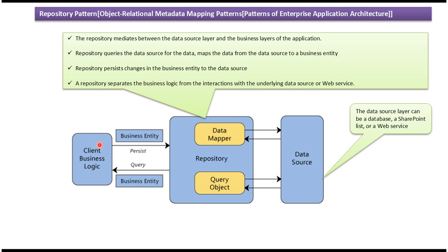Suppose this Client Business Logic wants to save some information in the Data Source. Then what it will do is it will send the Business Entity containing the data we want to save to the Repository. The Repository will then get the data from the Business Entity and save the data in the Data Source.